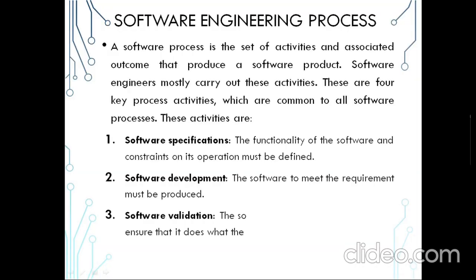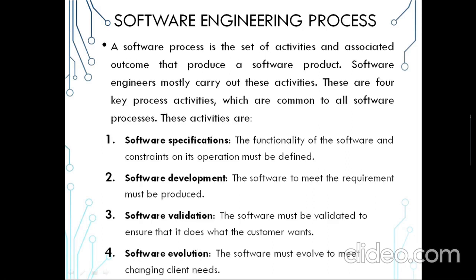The software engineering process is the set of activities and associated outcomes that produce a software product. The software product is developed as per the requirement by software engineering. Mostly software engineers carry out these activities, and there are four key process activities which are performed in the software engineering process across all software processes.